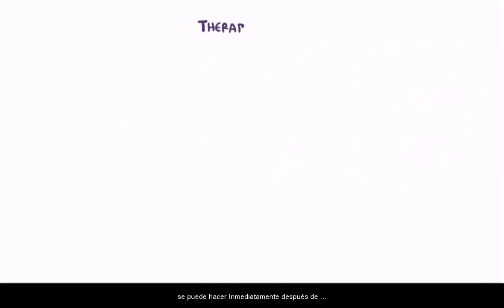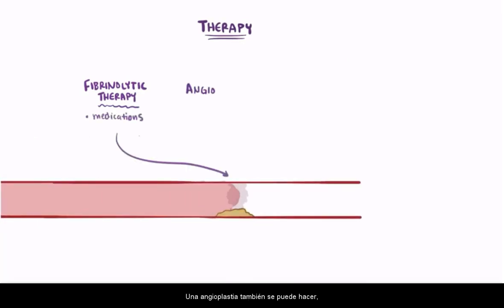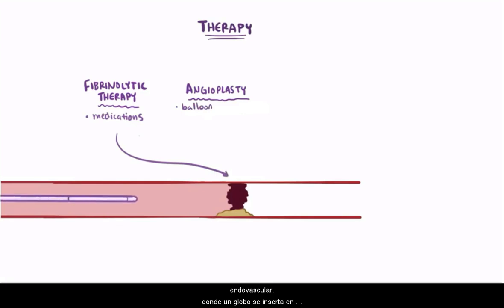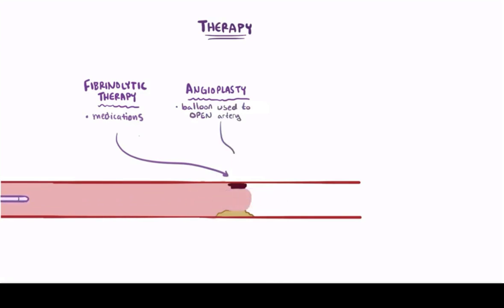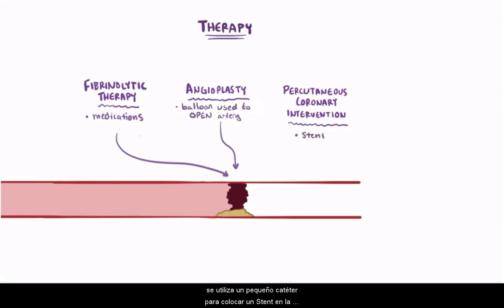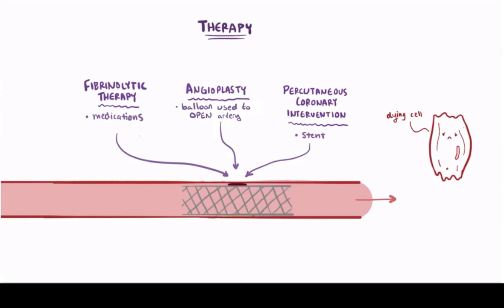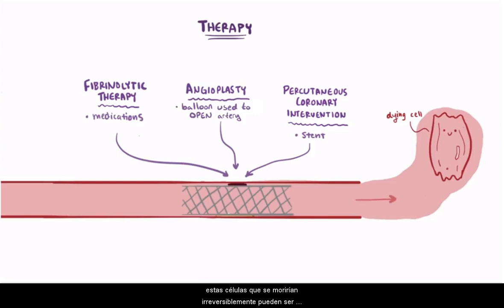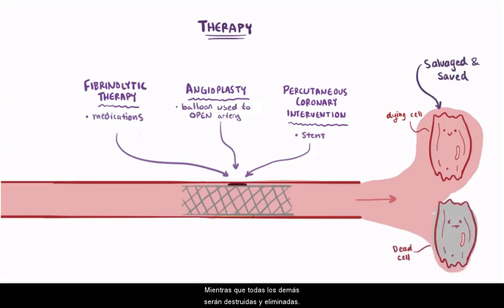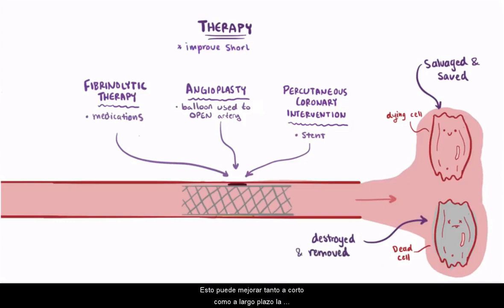A potentially life-saving treatment that can be done immediately following an MI is fibrinolytic therapy, which uses medications to break down fibrin in blood clots. An angioplasty might also be done — a minimally invasive endovascular procedure where a deflated balloon is inserted into the blockage and then inflated to help open up the artery. And finally, percutaneous coronary intervention might also be performed, where a tiny catheter is used to place a stent in the coronary artery to physically open up the blood vessel. Each of these focuses on reestablishing blood flow to the dying heart cells, since time is tissue.